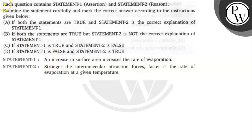Let's read this question. The question says that each question contains Statement 1, i.e. assertion, and Statement 2, i.e. reason. Examine the statements carefully and mark the correct answer according to the instructions given below. There are 4 options: A, B, C, and D.